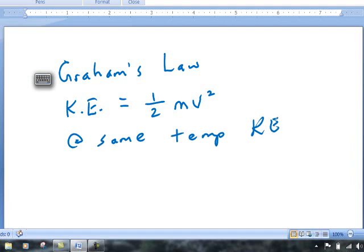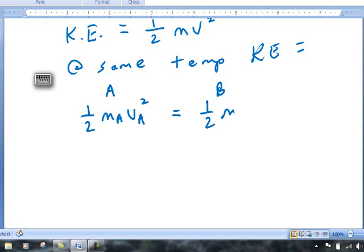So if we have a gas, say gas A, and also gas B, what we can say when they're at the same temperature is that the kinetic energy, or one half mA vA squared, is equal to the kinetic energy of gas B, which would be one half mB vB squared.